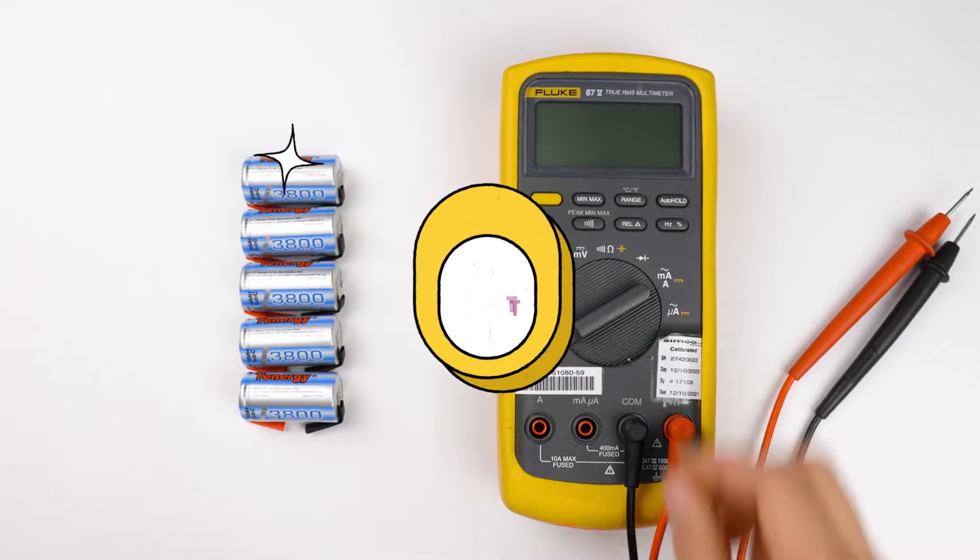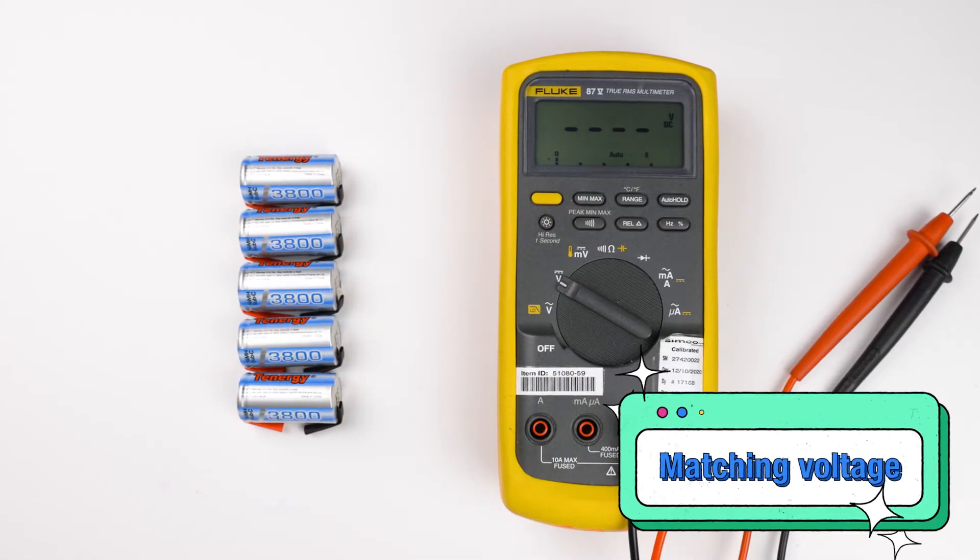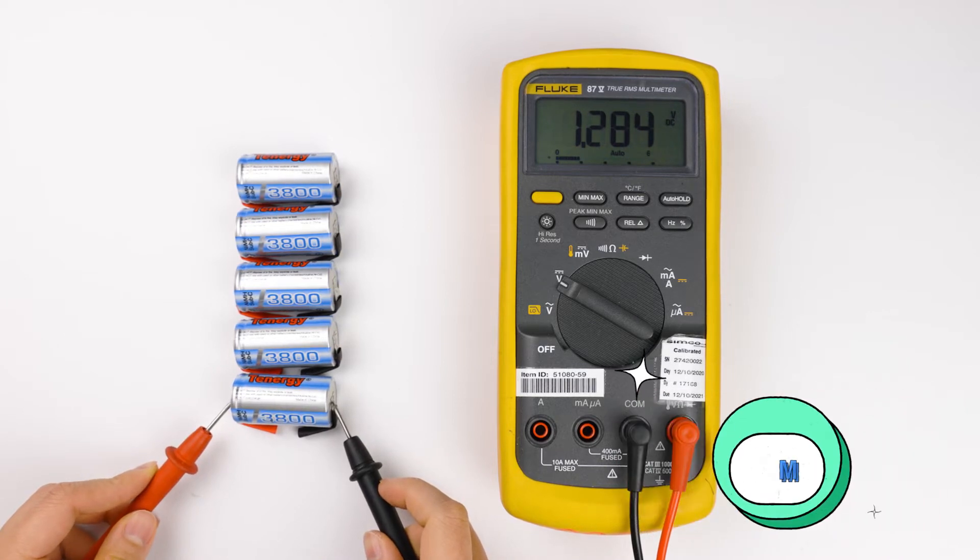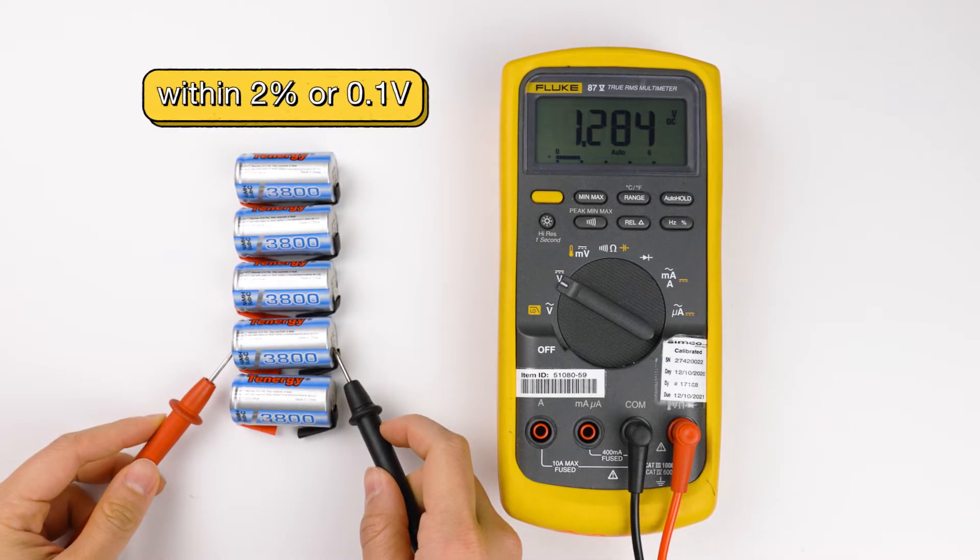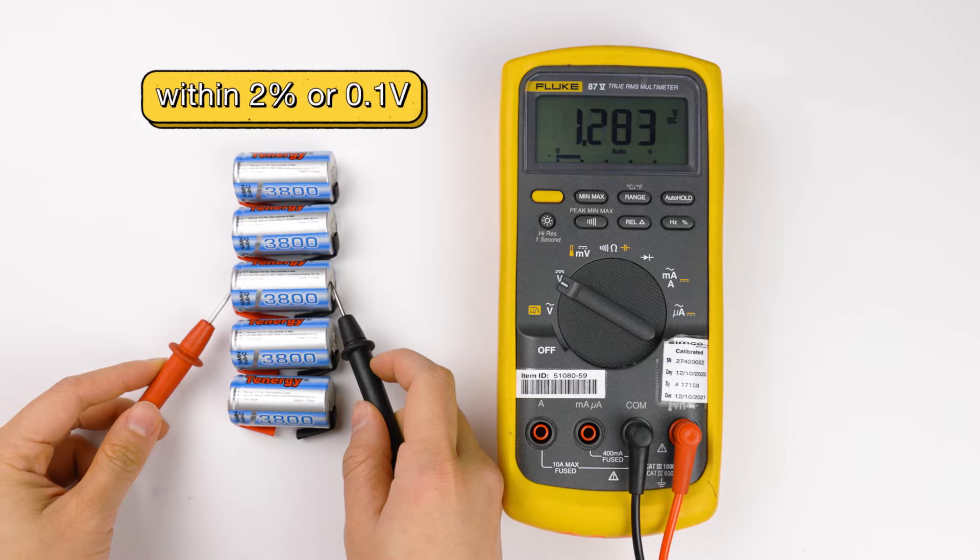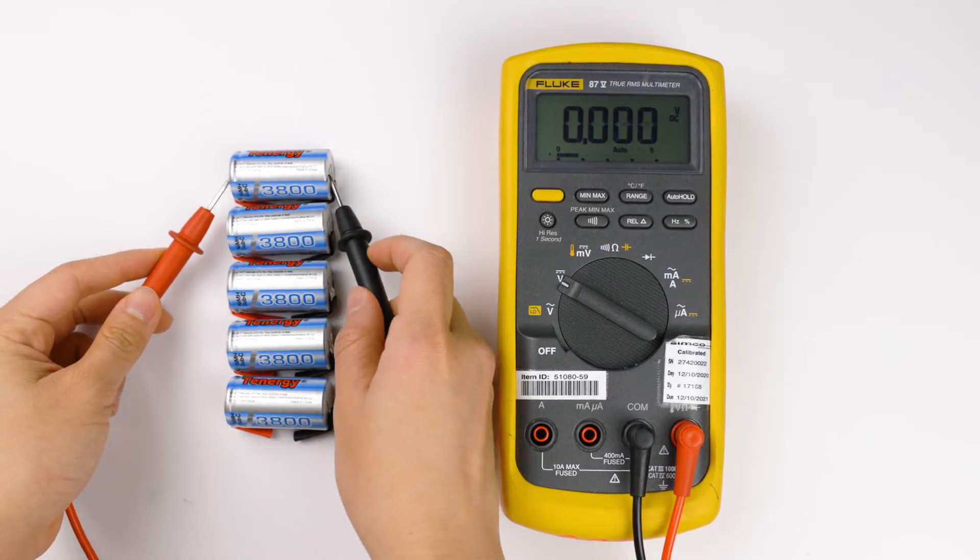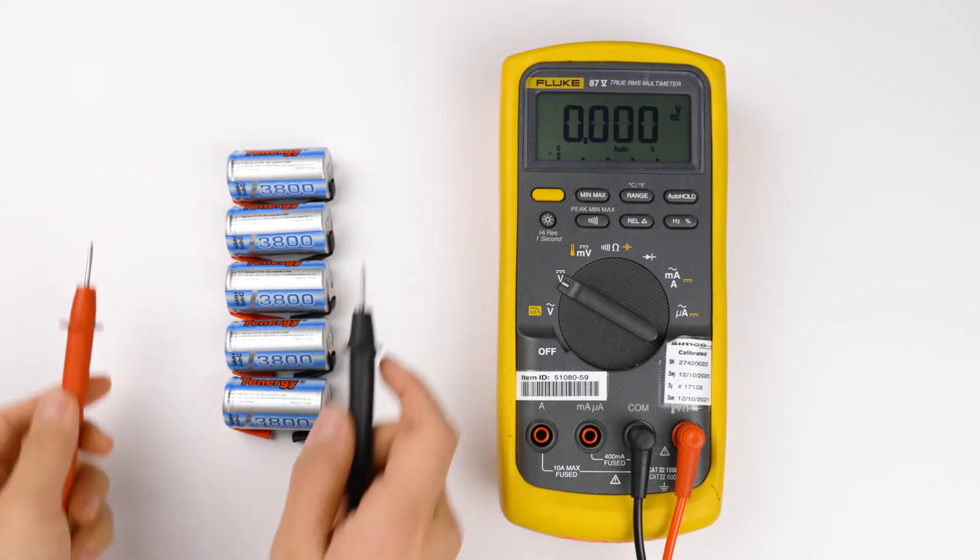The first thing you want to check before building your battery pack is the cell's voltage. You need to make sure that each cell's voltage is as close to each other as possible. At Tenergy, we keep the voltage for each cell within 2% or 0.1 voltage before making a battery pack. If your cell's voltages aren't close to each other, you might need to level them out by charging or discharging each cell.